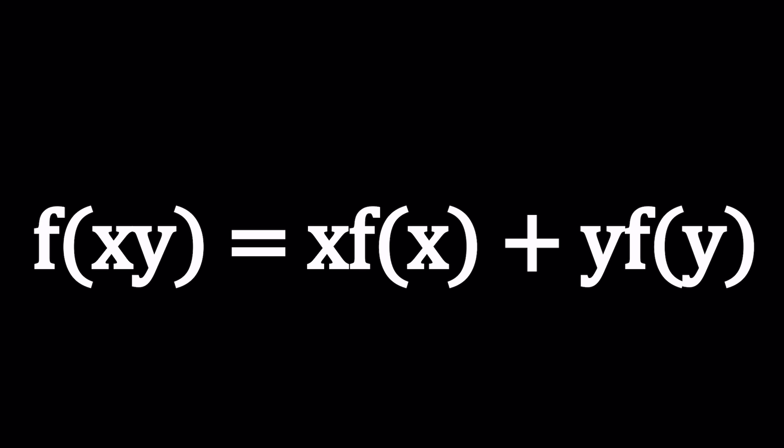So this problem was actually phrased a little differently, but I wanted to change it up a little bit because that would kind of give away something, which I'm not going to talk about until the very end, so stick around. So here's the function we have from reals to reals, so for any x or y that is a real number, this is true, and we've got to find an expression for f of x in terms of x.